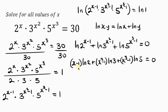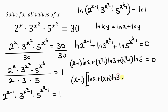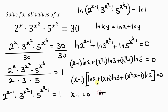Notice that (x−1) is a common factor. Factorizing it out: since x²−1 is a difference of two squares, it gives (x−1)(x+1), and x³−1 is a difference of two cubes, giving (x−1)(x²+x+1). So we get: (x−1)[ln 2 + (x+1)ln 3 + (x²+x+1)ln 5] = 0. We now have two cases.